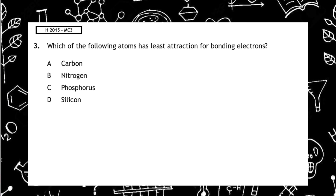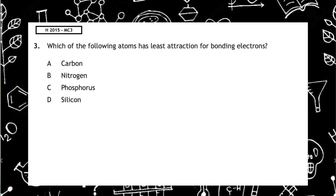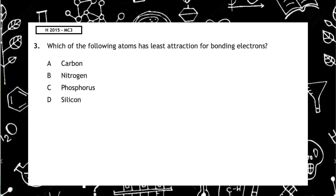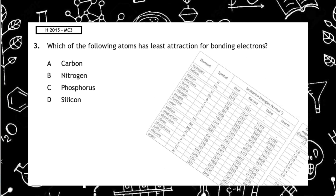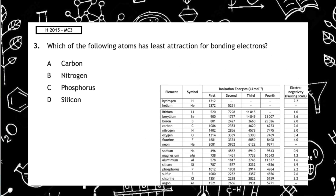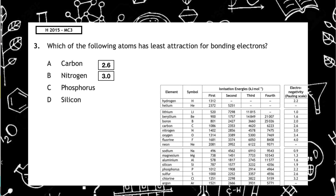This past paper question is from the Higher 2015 multiple choice 3. Which of the following atoms has the least attraction for bonding electrons? Again, using page 12 of the updated data booklet, we would select the electronegativity values for each of the elements given. The one with the least attraction is silicon with 1.9, so the correct answer is multiple choice answer D.